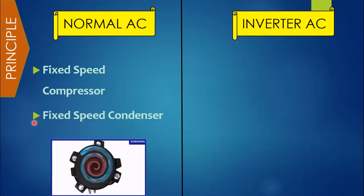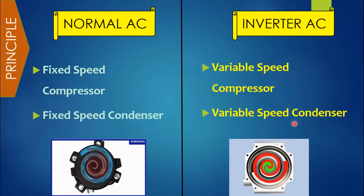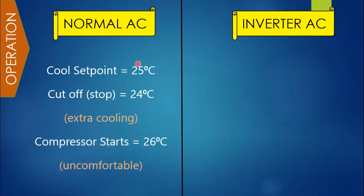In a normal AC, the speed of the compressor and the condenser does not change — they rotate at the same speed. Whereas in the inverter AC we have a variable speed compressor and a variable speed condenser. And in a 3D inverter we also have a variable speed evaporator or indoor motor. This means the speed of the compressor and condenser changes with the cooling requirement.